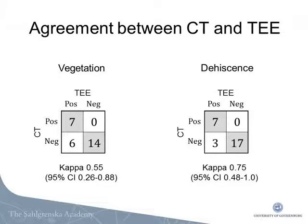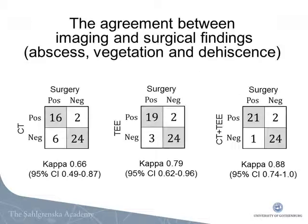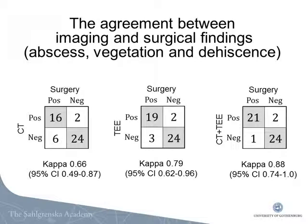TEE found more vegetations than CT, and TEE was also better in detecting valvular dehiscence, which is expected since TEE has the advantage of visualizing blood flow. Sixteen patients were operated, and the agreement between imaging findings — that is, abscesses, vegetations, and dehiscence — and surgical findings was good when comparing each modality individually with surgery. When combining the findings of CT and TEE, the agreement with surgery improved.